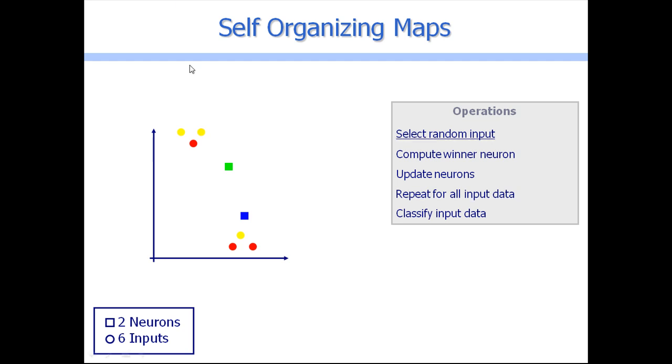We have to continue and then we repeat for all the input data. Let's select a different one. Suppose we selected this input. Now the winner neuron will be again the green one, and we update it. As the blue neuron is not as far as in the beginning, its displacement is a little bit smaller.